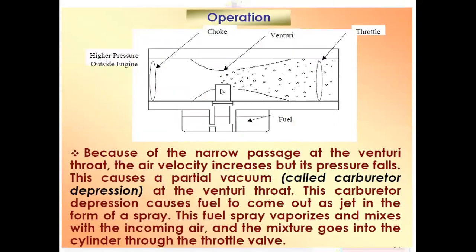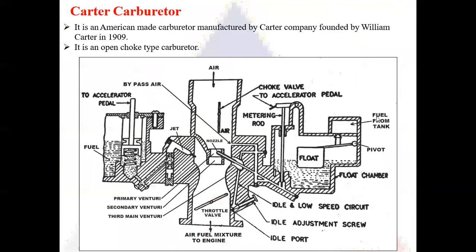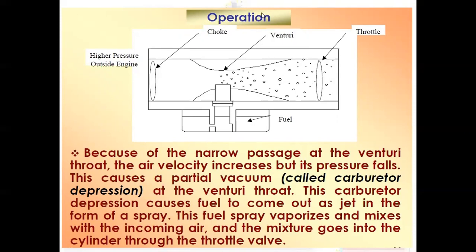The function of the venturi inside the carburetor is to increase the kinetic energy of air. With this increase in kinetic energy, pressure drops in the venturi portion. The fuel at higher pressure — created by the fuel pump — is drawn into the venturi by this vacuum. The fuel passes through the nozzle, atomizes, and gets homogeneously mixed with air. This air-fuel mixture is then supplied through the intake manifold into the combustion chamber. This is the working of the venturi and the simple carburetor.